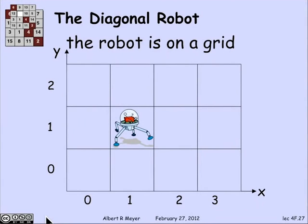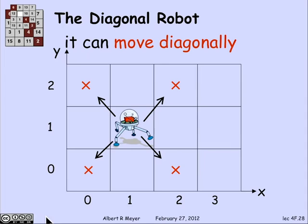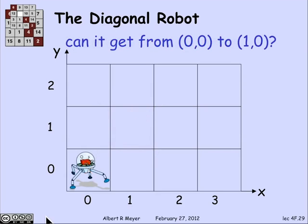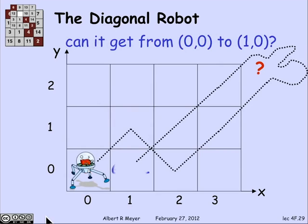Let's do one more example. Suppose I have a robot on an integer grid, and we think of the robot's position as a pair of non-negative integer coordinates of the square it's in. The robot can make a diagonal move in one step — it can move one step northeast, southeast, northwest, or southwest, and that's it. The question is: suppose you start the robot at the origin (0, 0). Is there some way it can wander around following its moves and get to the square (0, 1)?